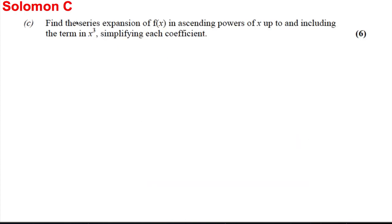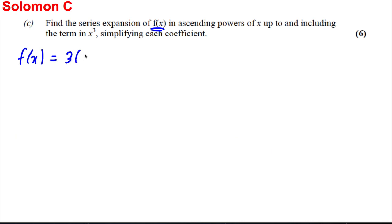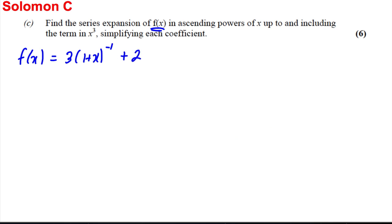Finally, part C, we want to find the series expansion of f of x. Now f of x, we've done it now, is equal to 3 times 1 plus x to the minus 1 plus 2 times 2 subtract x to the minus 1. And we want to go up to x cubed. So firstly, let's do this part: 3 times 1 plus x to the minus 1.